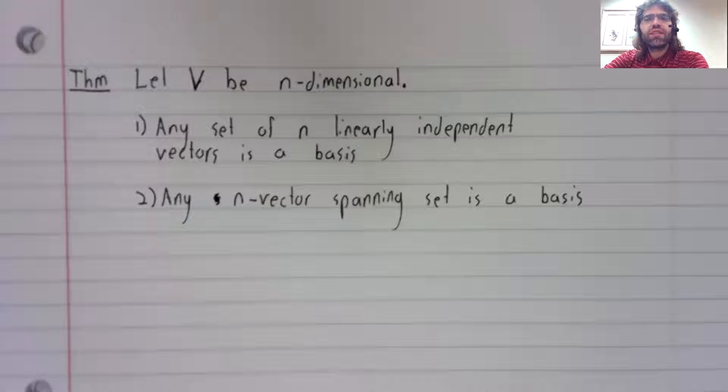Suppose that V is an n-dimensional vector space. Then any set of n linearly independent vectors is a basis, and any n-vector spanning set is a basis.